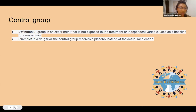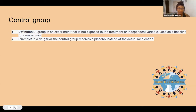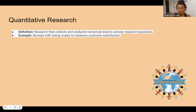Next we have a control group. A control group is a group in an experiment that is not exposed to the treatment or the independent variable; it is used as a baseline for comparison. The control group is the group that receives the placebo or receives nothing. The other group is called the experimental group or treatment group — that's the group that receives the treatment or the experiment. The placebo goes to the control group.